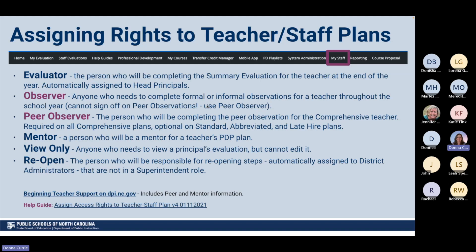Assigning access rights to teacher and staff plans is done on the My Staff page. You can give evaluator rights — the lead principal automatically comes in with evaluator rights. Everyone who has your school as their primary location is assigned to you as evaluator if you come in with a 114. If you are an assistant principal, you can be assigned as an evaluator or as an observer. An observer has roles very similar to the evaluator — the only thing they can't do is sign off on the summary at the end or act as a peer observer. They can do observations, make comments, and add notes, but cannot complete the summary evaluation.